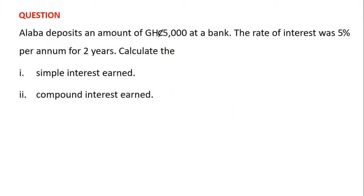The problem is: Alabad deposits an amount of five thousand Ghana cedis at a bank. The rate of interest was five percent per annum for two years. The amount of money Alabad deposits in her account is the same as the principal, so here the principal is five thousand Ghana cedis. The rate of interest was five percent per annum and the period is two years.